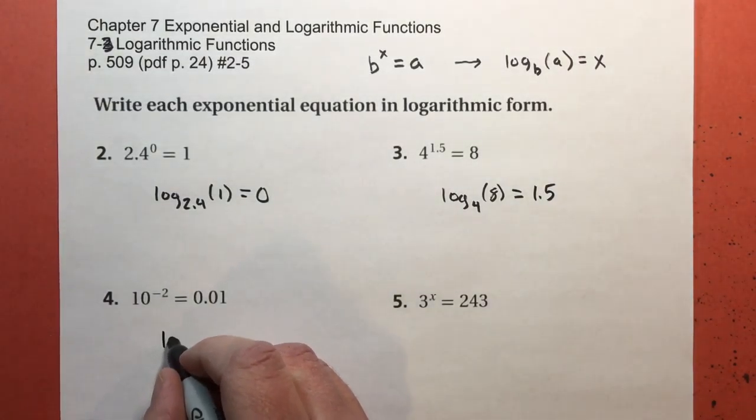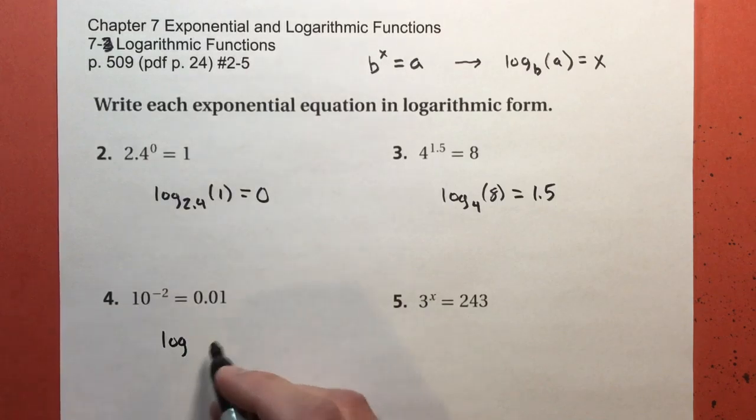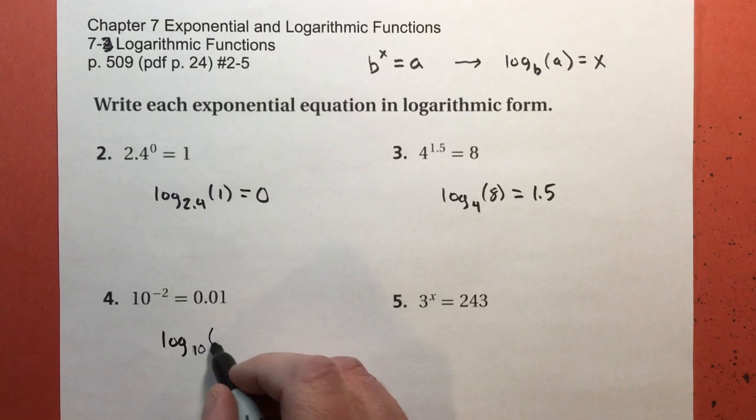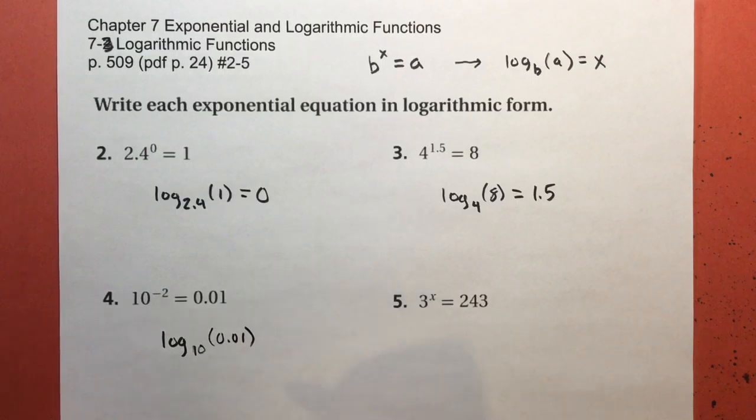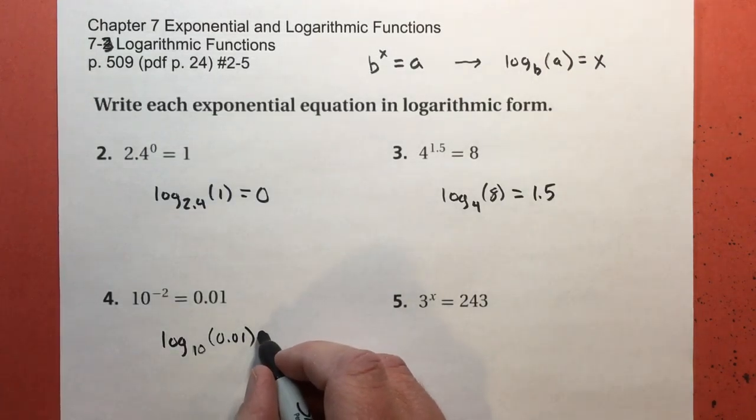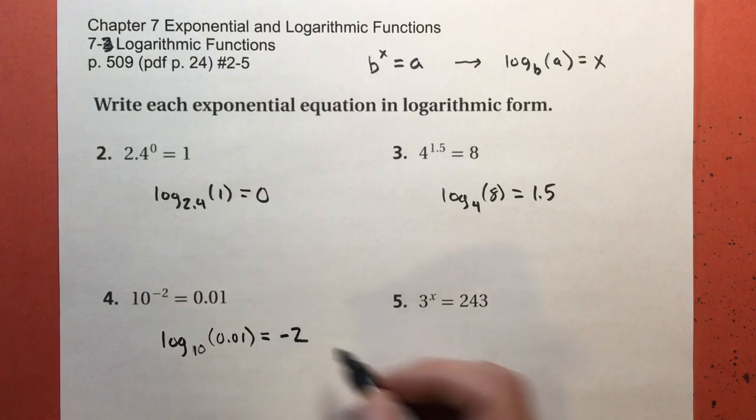Number four. My base is 10, so this is log base 10. My output for the exponential function, 0.01, is what I'm going to put in my log function. The x and the y switch. This equals the exponent, which is negative 2.